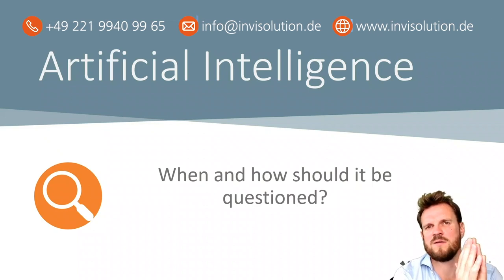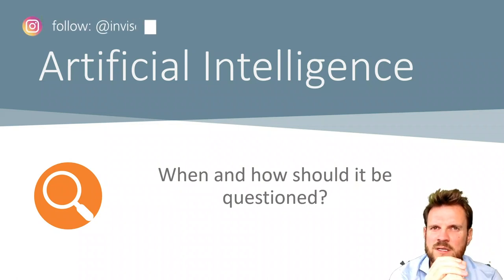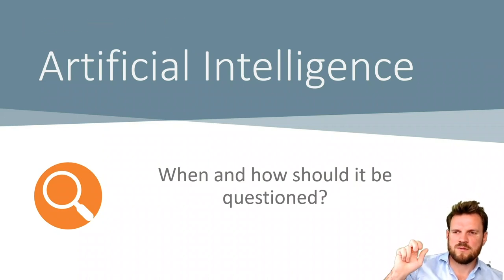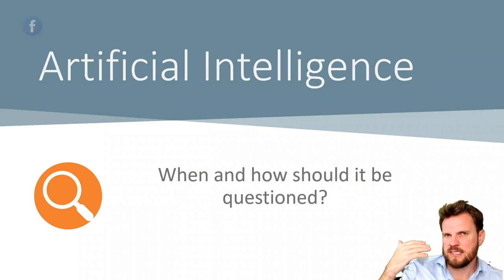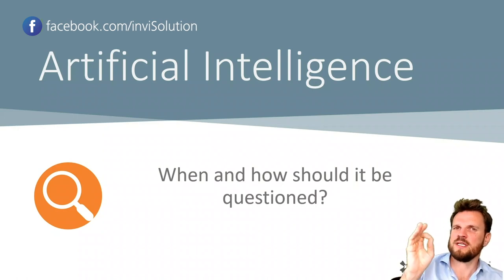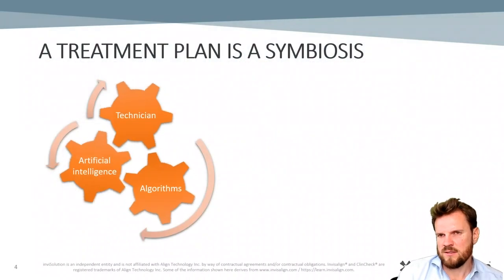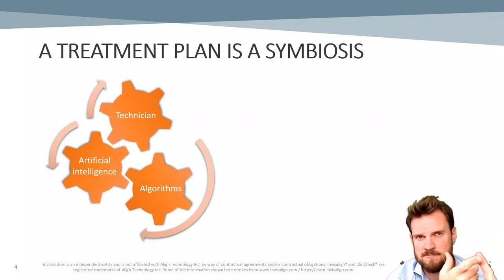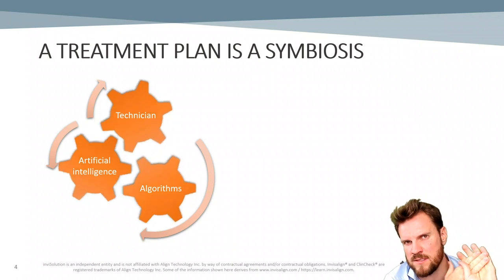In today's topic I would like to explain a little more about artificial intelligence — when and how it should be questioned, and what you can do when you review the digital treatment plan. I will show you three different clean checks and explain with these clean checks how you can control it even better and how you can make the most out of them. We need to understand that the digital treatment plan is a symbiosis of the technician, the artificial intelligence, and the algorithms of this software.